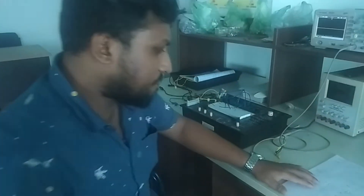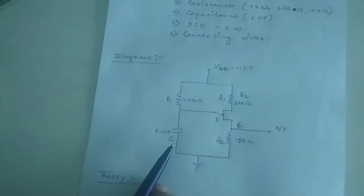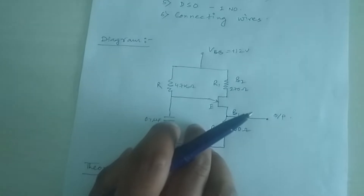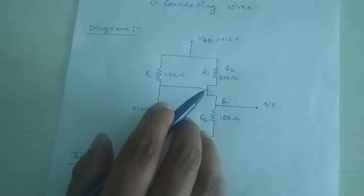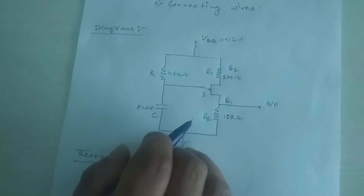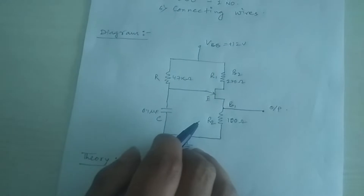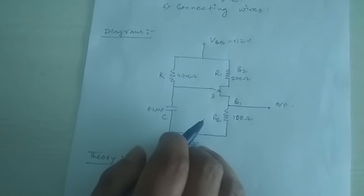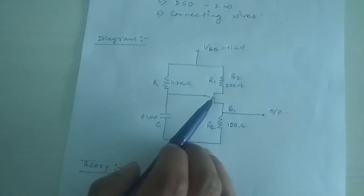First of all, we need to know what is an oscillator. An oscillator is a device which produces a waveform by itself. A relaxation oscillator is a device which can generate a non-sinusoidal waveform without any external input — that means it produces a non-sinusoidal waveform by itself. So the output of UJT as a relaxation oscillator depends on this principle.